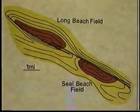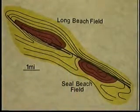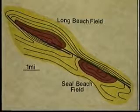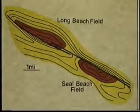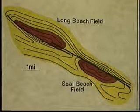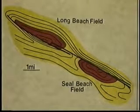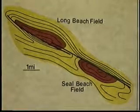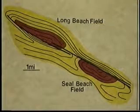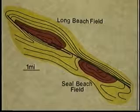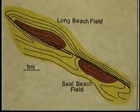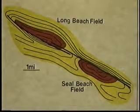Along the Newport Englewood trend in the Los Angeles basin, fields are aligned along asymmetrical transpressional folds. In this structural diagram, Long Beach and Seal Beach fields are located along a fold that displays both the double crest nature and dip reversal characteristics of transpressional stress.